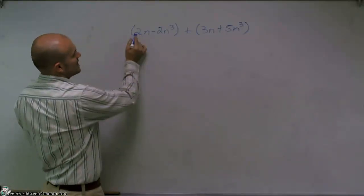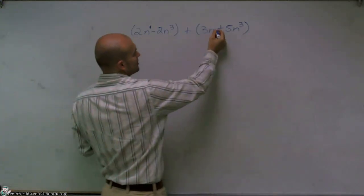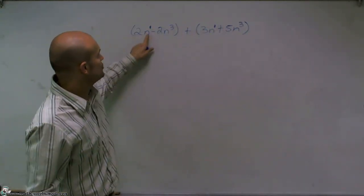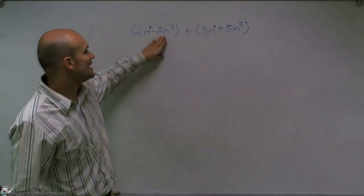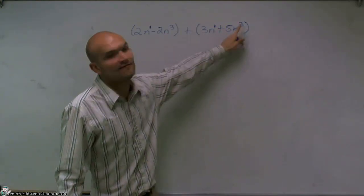So here you can see I have 2n. Well, n is actually going to be to the first power. And then here I have 3n to the first power. Therefore, I can only combine 2n to the first with 3n to the first. And here I have a negative 2n cubed, and I can only combine that with 5n cubed.